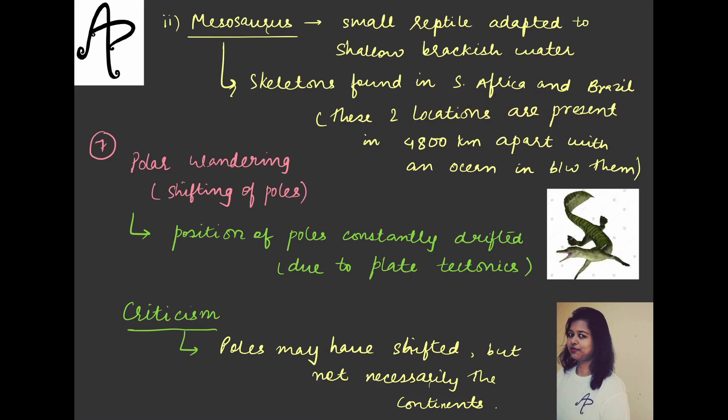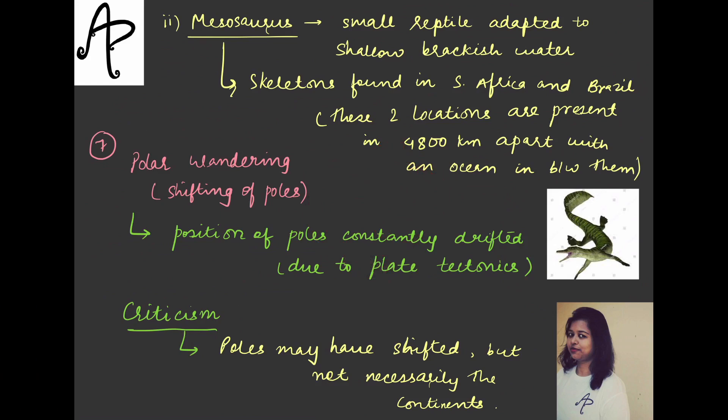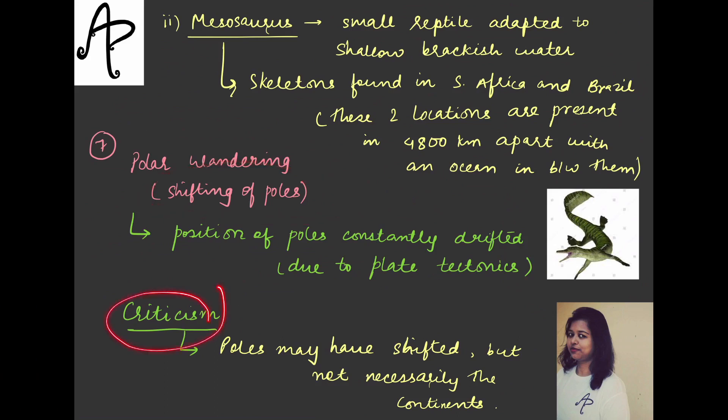Another evidence is polar wandering — the shifting of the poles. It was believed that the positions of the north and south poles constantly drifted due to plate tectonics and the movement of lithospheric plates. Because of that, the position of the poles also shifted, and they believed yes, the continents have drifted. But the criticism says that poles may have shifted, but it is not necessarily true that the continents would also shift — even if you prove the poles shifted, it doesn't prove that the continents shifted.